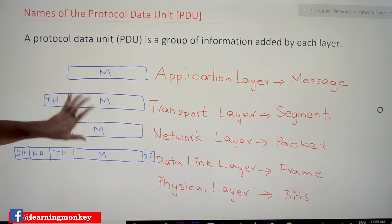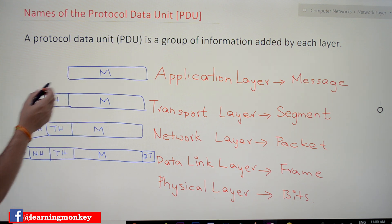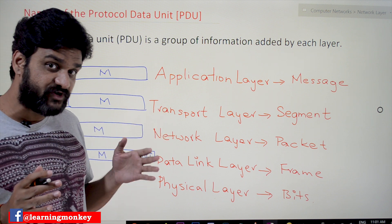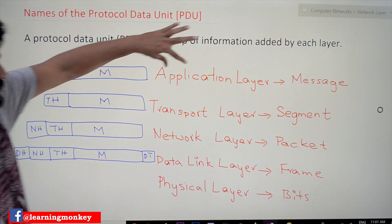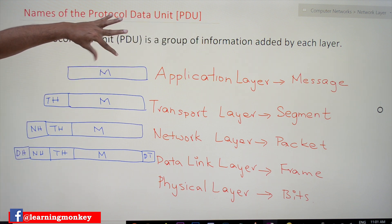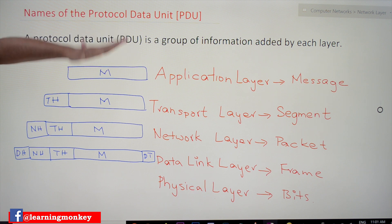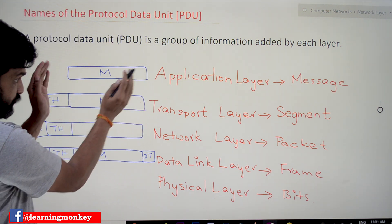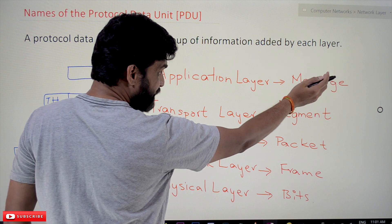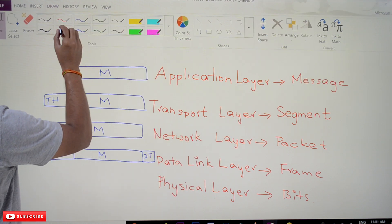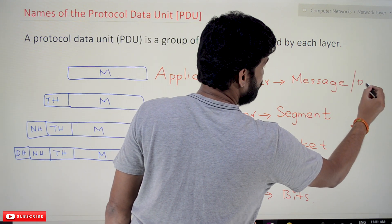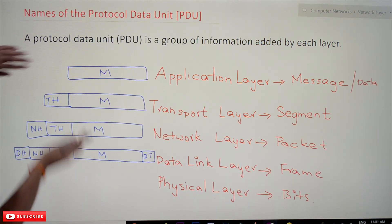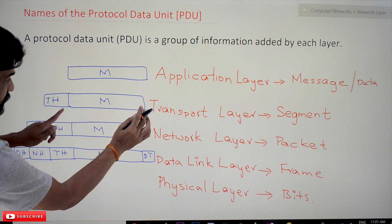So here, the message that we want to transfer — the data at the application layer — is the unit of data that needs to be transferred from the application layer down to the transport layer. That PDU is what we call a message in the application layer. So in the application layer it is called a message or data. This is the original data that needs to be transferred.